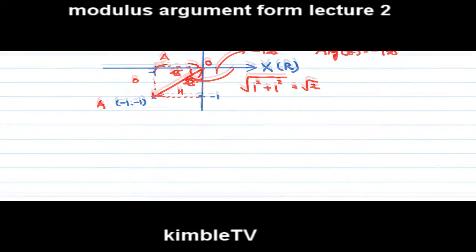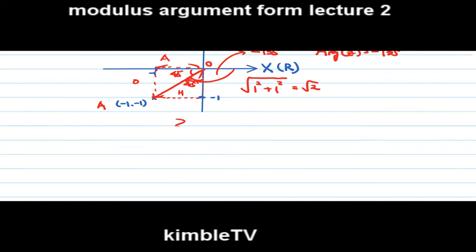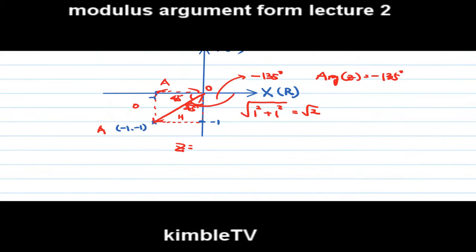And z equals root 2 cos minus 135 and root 2 sin minus 135. Therefore root 2 cos minus 135 plus i times root 2 sin minus 135.